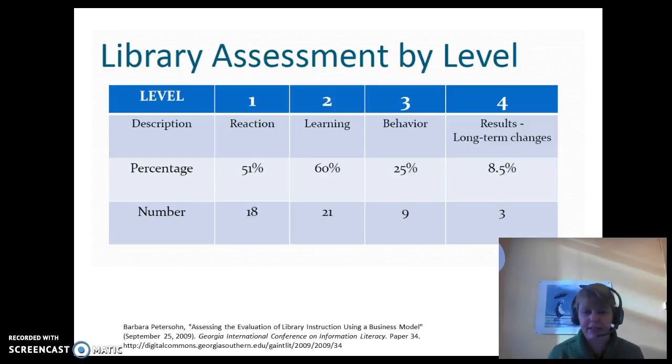Barbara Peterson, in a presentation for the Georgia International Conference of Information Literacy, did a really neat study back in 2009. She did a literature review of articles written between 2002 and 2009, identified ones that assessed information literacy, and then saw what level in Kirkpatrick was each paper looking at. You can see, not surprisingly, most of the papers that have been published are looking at level one and or level two assessment. Level three and level four is much harder and much more time consuming, and Peterson's research backs up that it's just not seen as much.